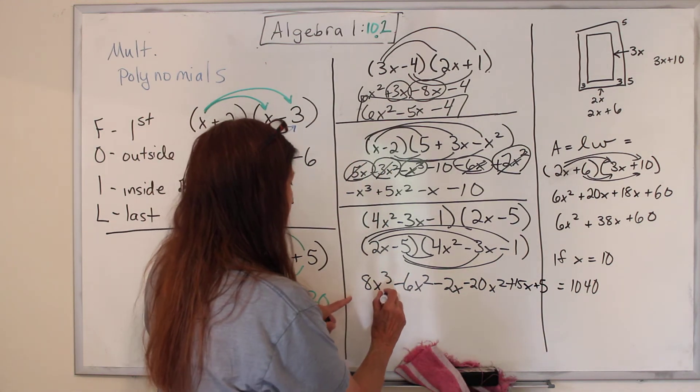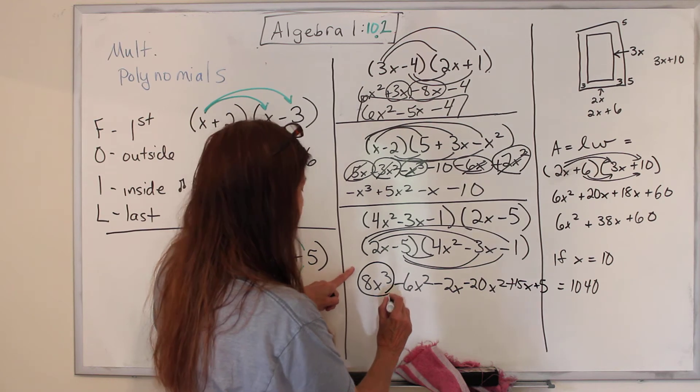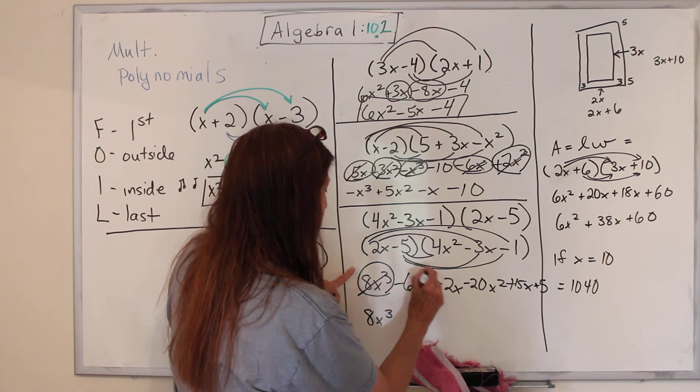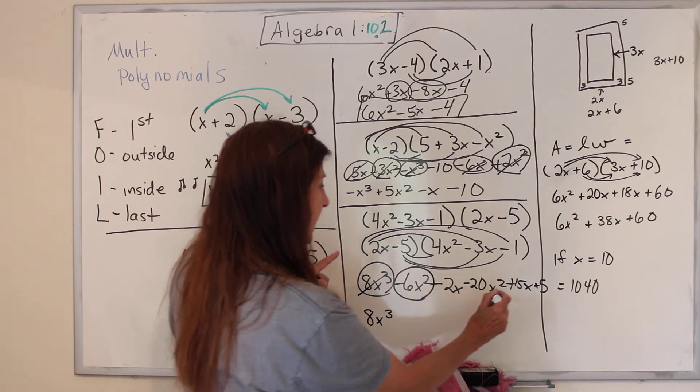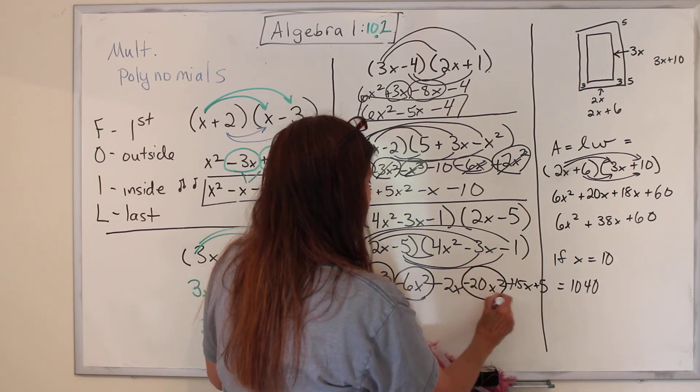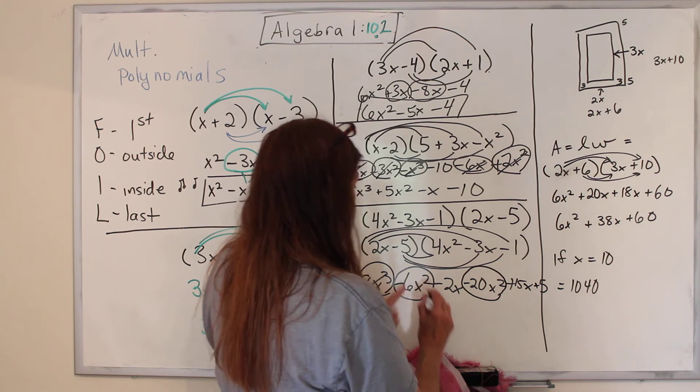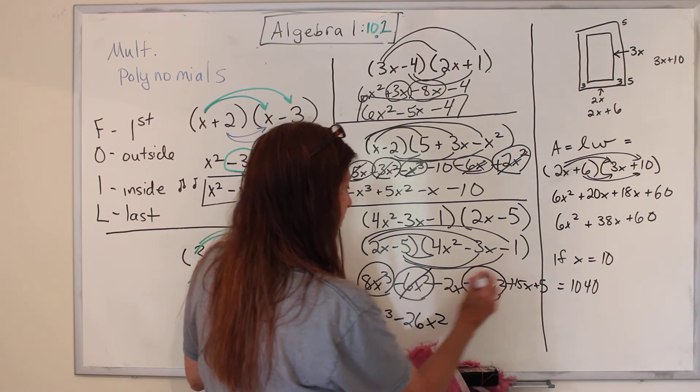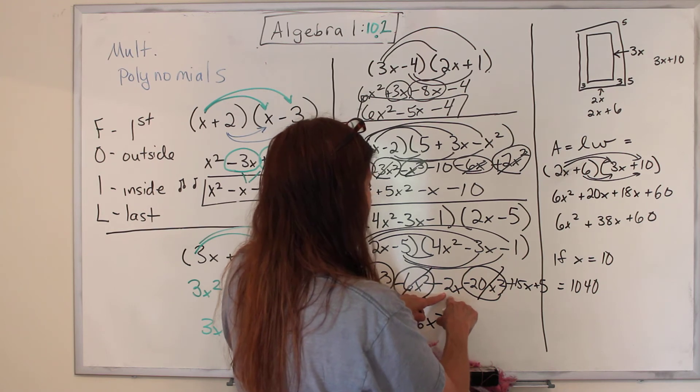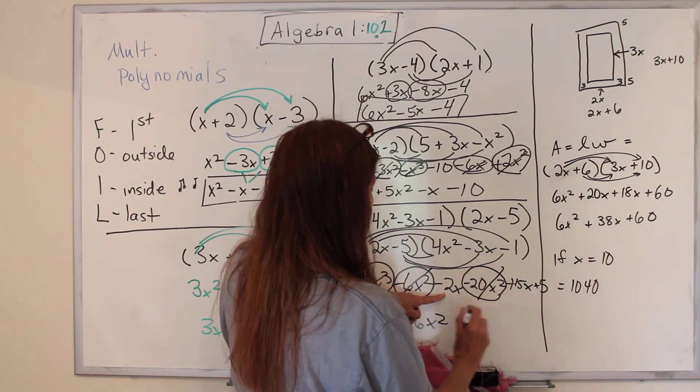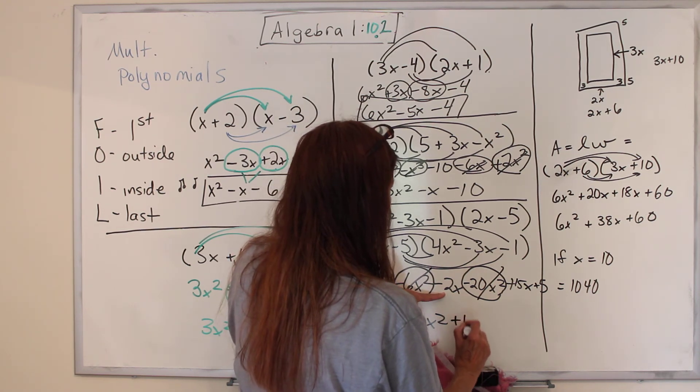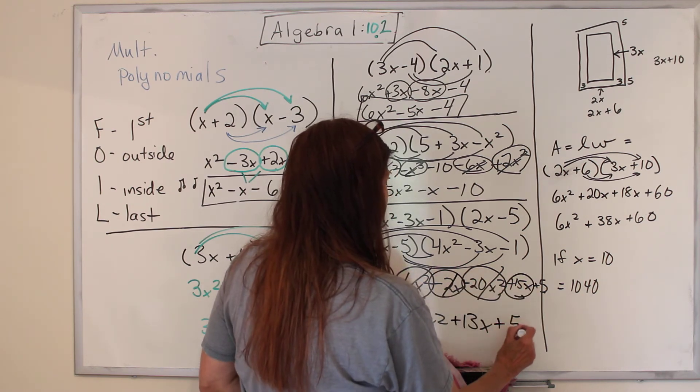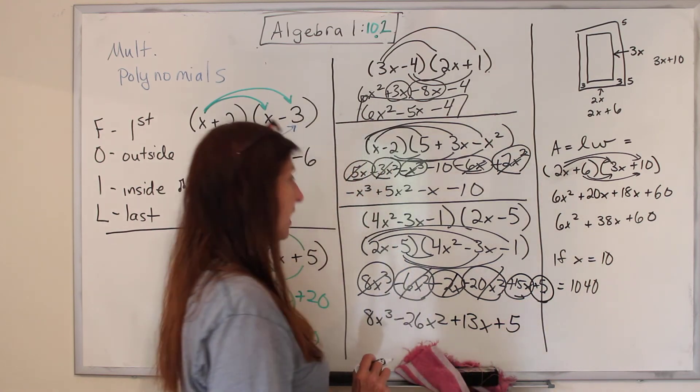Now we've got to gather up. I only have 1 cubed, and it's that one. 8x cubed. Mark it out. Squared, I've got a negative 6x squared. I've got a negative 20x squared. So this is negative 26x squared. Mark them out. X's, I have a negative 2x and a positive 15x. So that's plus 13x. Mark them out. And my final thing is a 5. Ta-da!